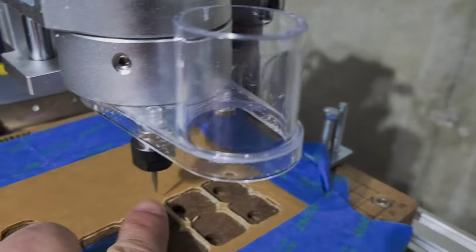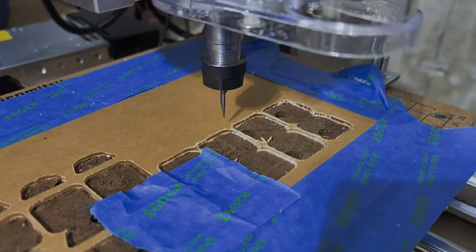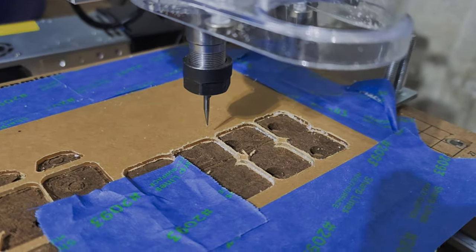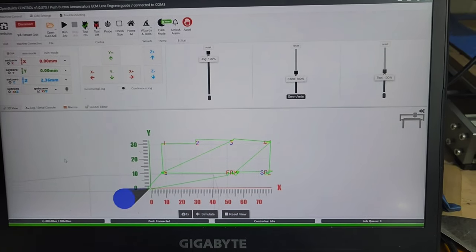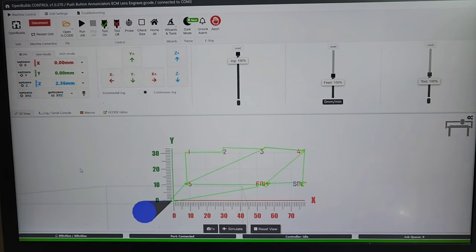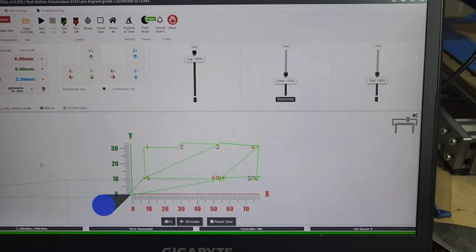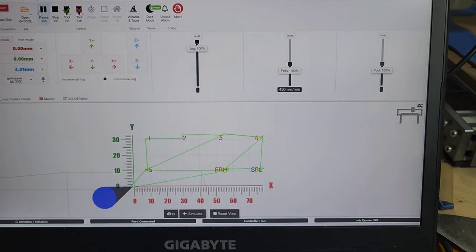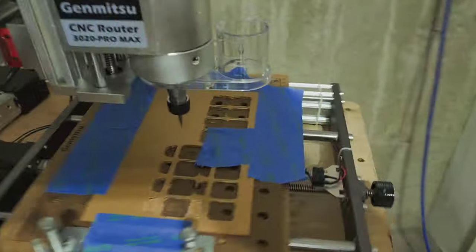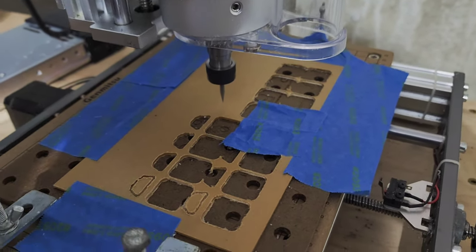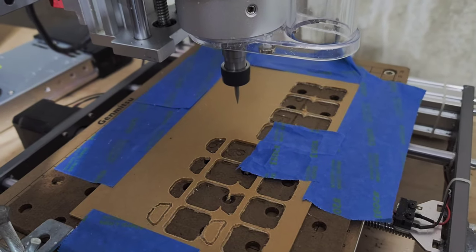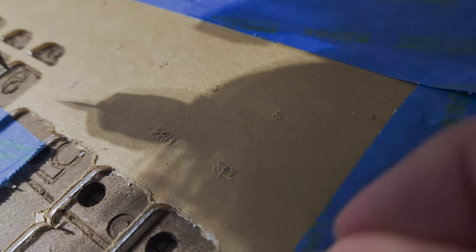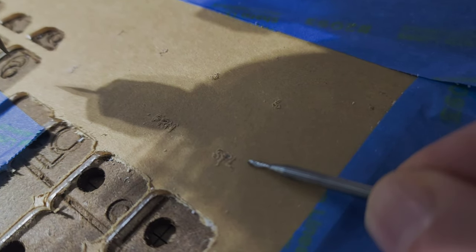First thing I'm going to do with this v-shape bit, 20 degree, is engrave the top lettering and numbering on the switches. I've loaded in the first file for the engraving in OpenBuilds. Let's start the CNC run job. This might not look like much but you'll see later as we fill it in with paint.